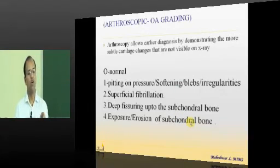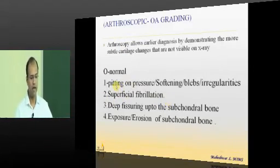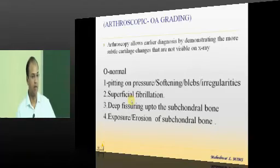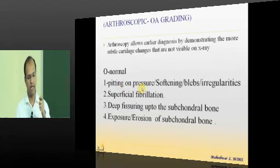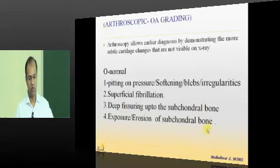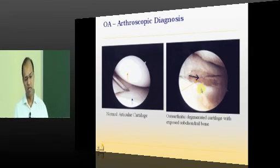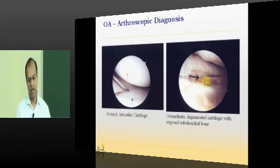Arthroscopic grading is more accurate than radiographic grading but is an invasive procedure. Grade 0 is normal — a smooth, white, glistening articular surface. Grade 1 is softening: the cartilage pits on probing, with blebs or surface irregularities. Grade 2 is superficial fibrillation, Grade 3 is deep fibrillation, and Grade 4 is exposure of the subchondral bone, where the entire cartilage is gone.